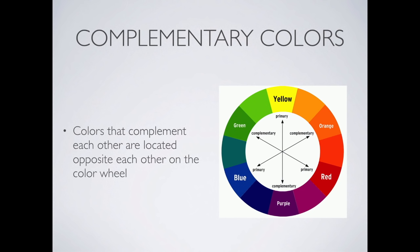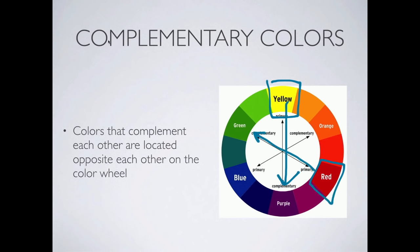Complementary colors are colors that complement each other, and they're generally 180 degrees opposite on the color wheel. If we look at yellow as our primary color, the direct opposite — straight down — would be its complement, which in this case would be purple. If we took red as our primary and went directly across, we'd end up with green as its complement. That direct opposite works nicely as a contrasting color.